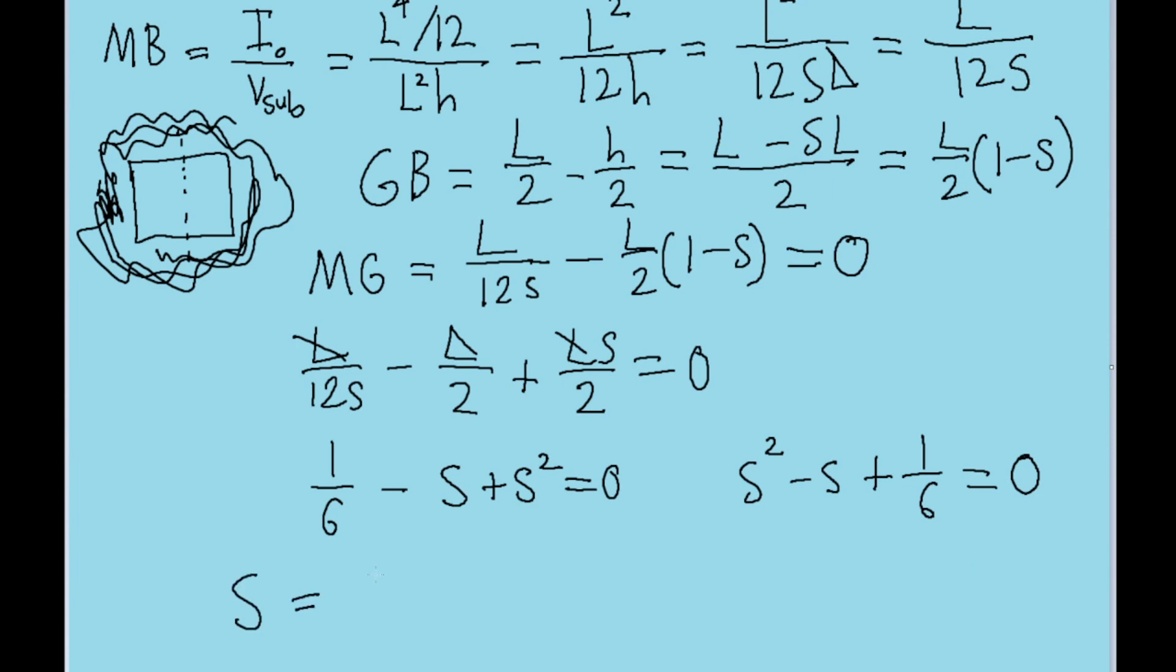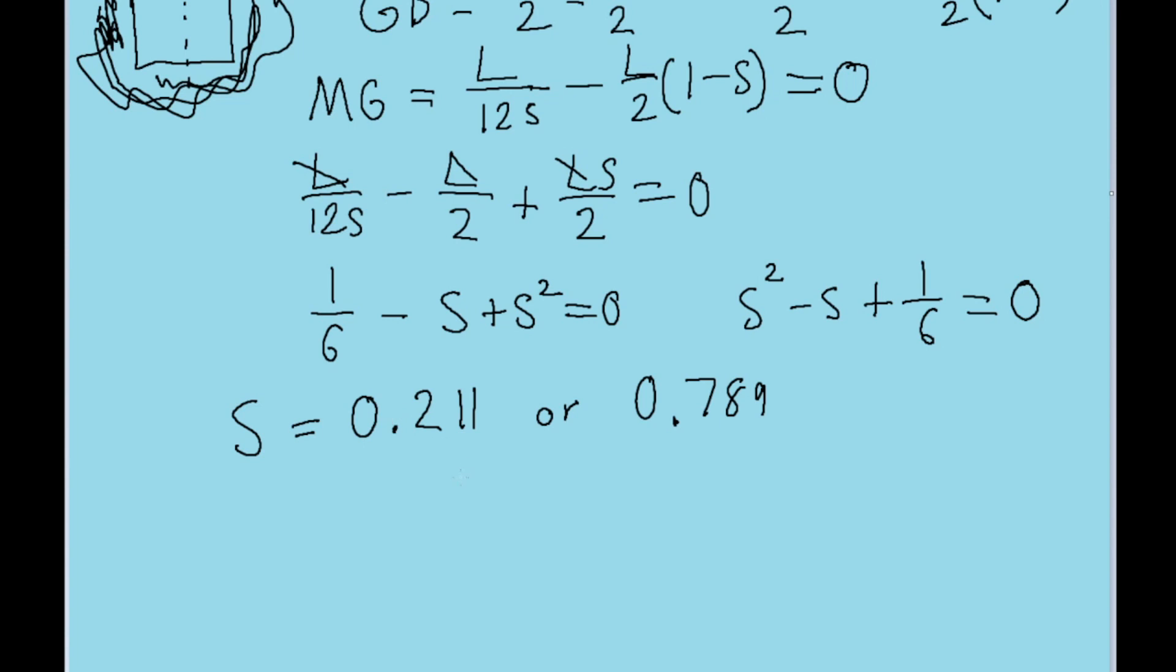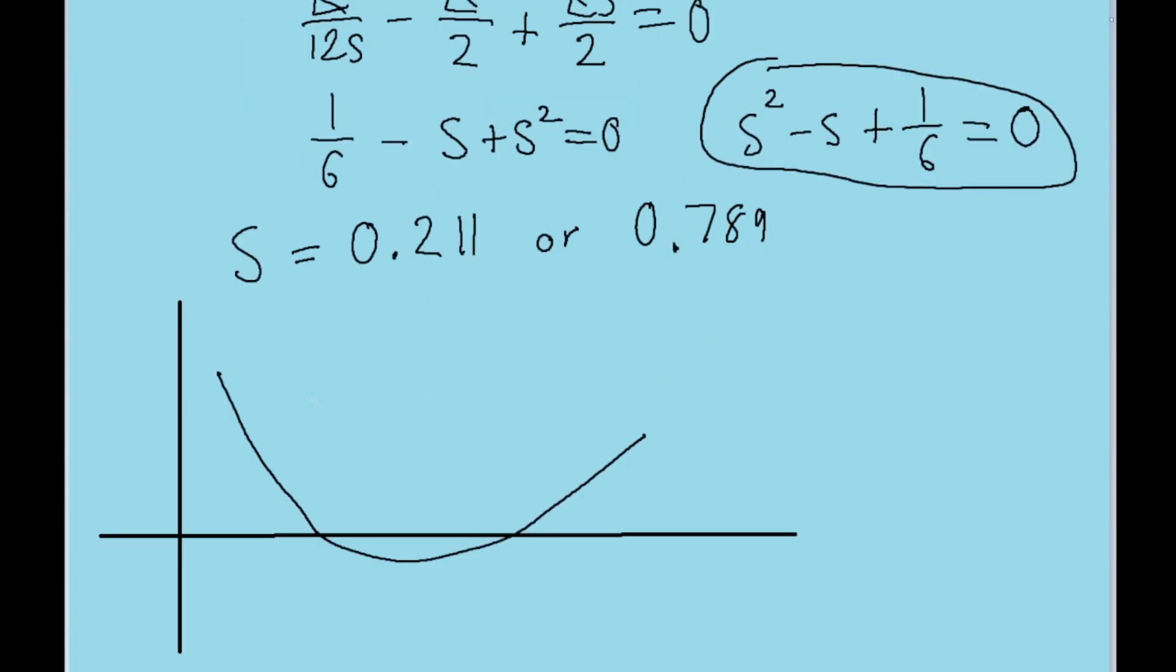Now you can either graph this or use the quadratic equation to tell you when this equation equals 0. When you do that, you find that s can either have values of 0.211 or 0.789. If you were to make a graph of this quadratic function, you find that the plot at these two points comes down, goes negative for a while, and then becomes positive. These two zero points are the values we just found.